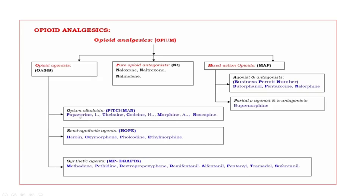First let us discuss opium alkaloids. The drugs are PTCMN, where the bold letters are P, T, C, M, N. P — papaverine. T — thebaine. C — codeine. M — morphine. N — noscapine.